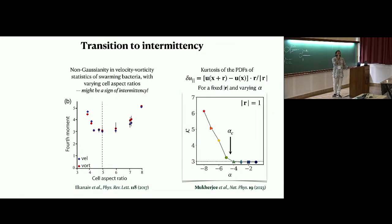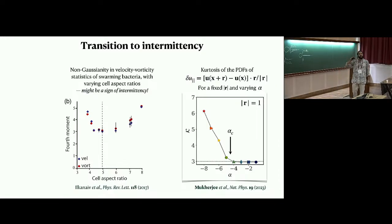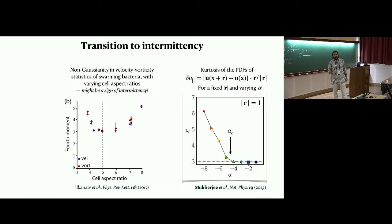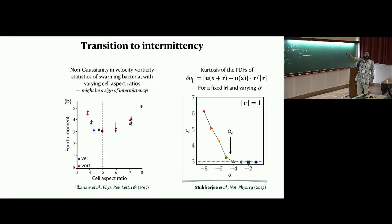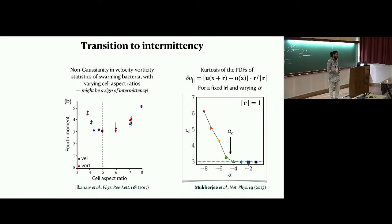If you fix the value of r and vary activity, there is a critical activity beyond which you have deviation from Gaussianity — you can see this in the kurtosis of these distributions. For Gaussian distributions the kurtosis is three, but above certain activity it picks up, showing the emergence of intermittency. There was earlier work showing non-Gaussian distributions for velocity and vorticity, which could be the first signs of intermittency in experiments. The cell aspect ratio is a very important parameter for determining what kind of flow you get in the swarming state.